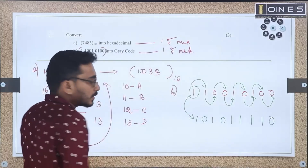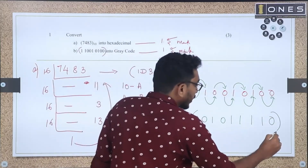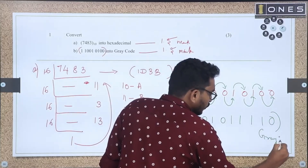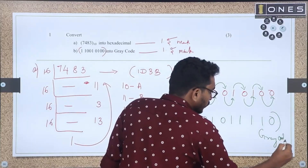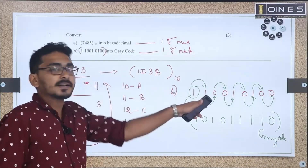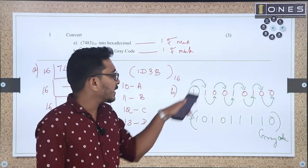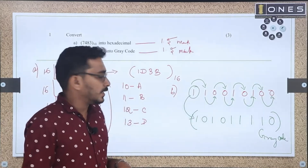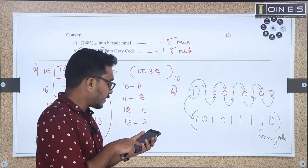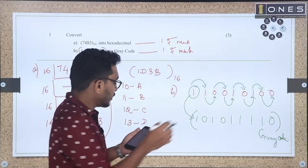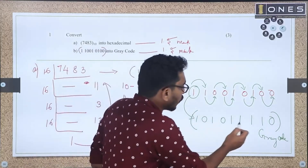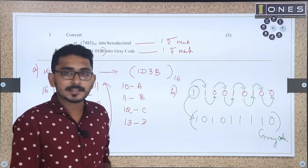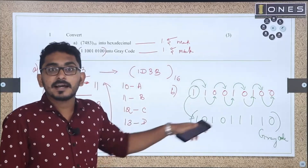This gives us the Gray code result. The answer is 1010010110. So the binary number 1110110100 converts to Gray code 1010010110.